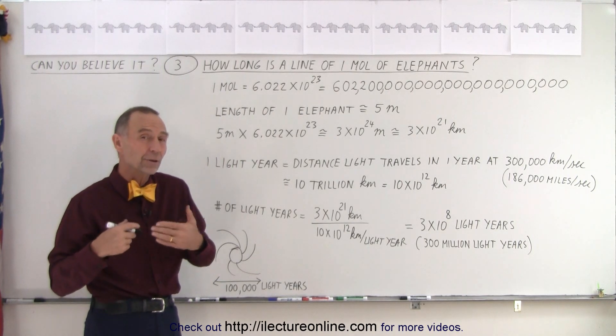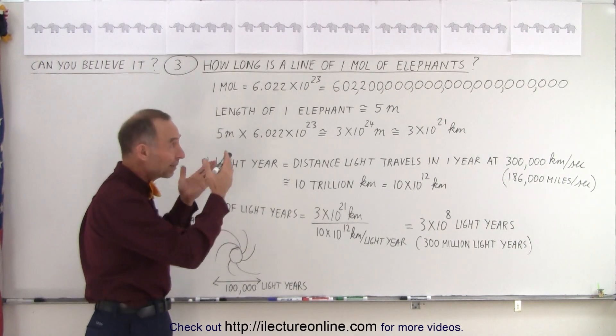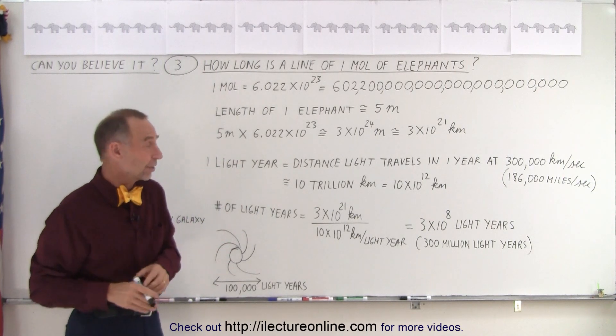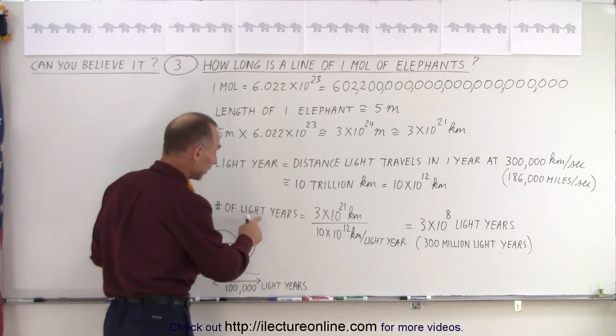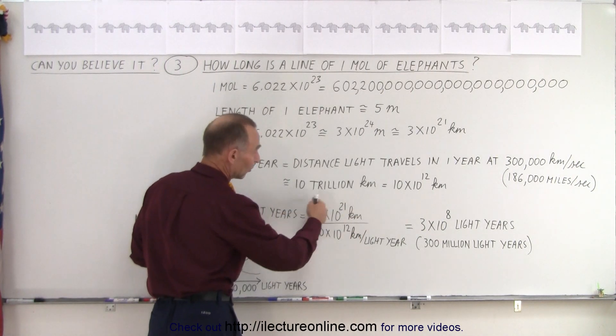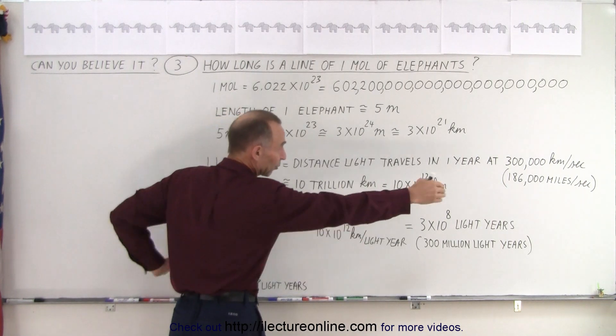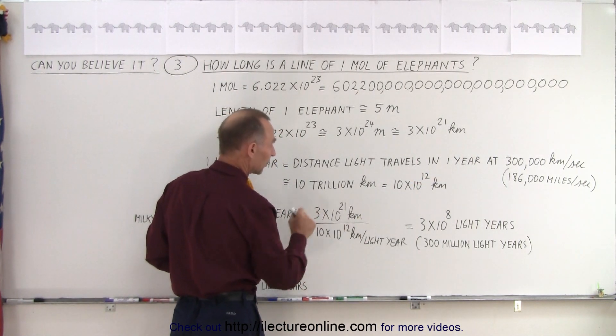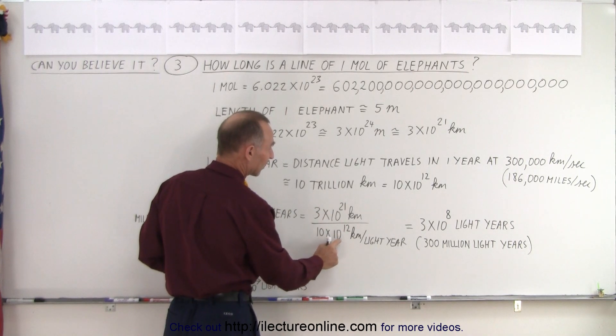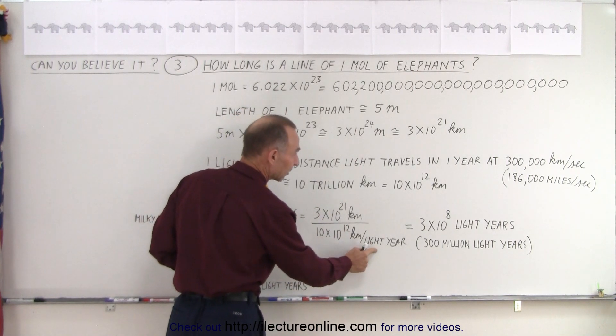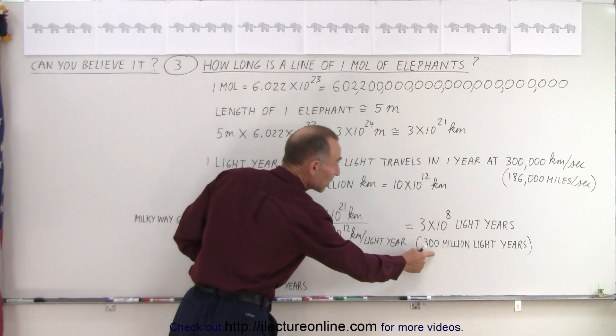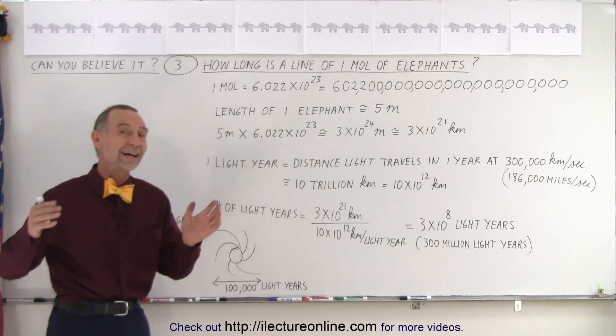Well, how does it then compare the length of that many elephants? How does that compare in light years? It turns out to find out the number of light years, we take 3 times 10 to 21 kilometers and divide that by 10 times 10 to the 12 kilometers per light year. And we end up with 300 million light years.